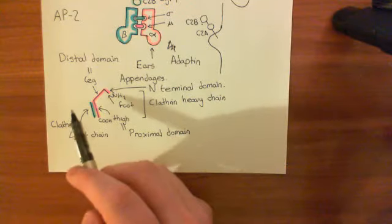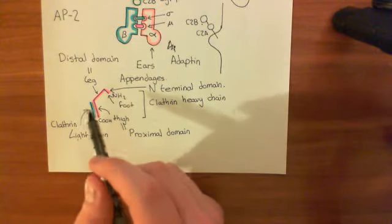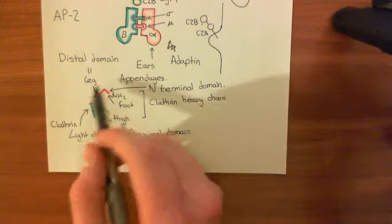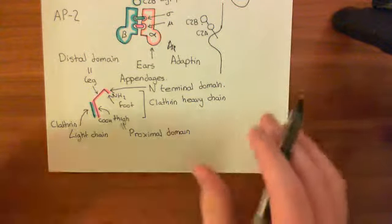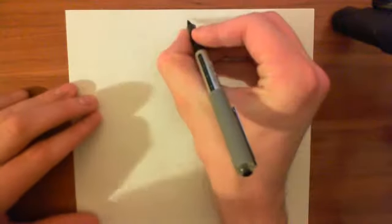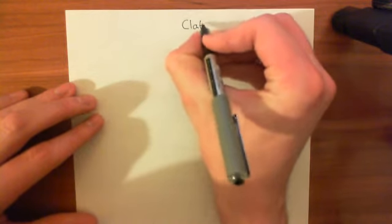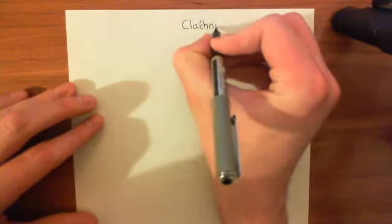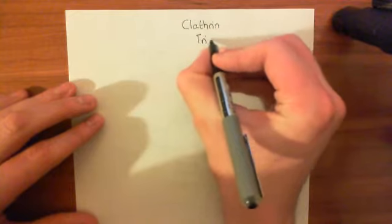Clathrin doesn't go around just like this, usually. If you go into the cytoplasm, what you will actually find is loads of these trimerized together. What you form is what are known as clathrin triskelions.